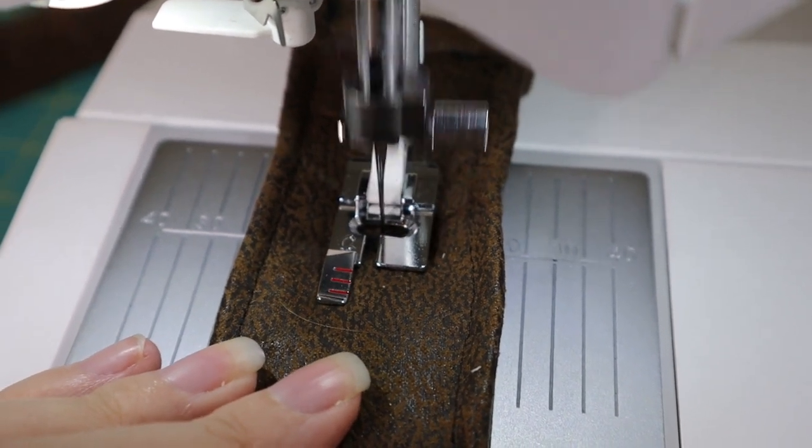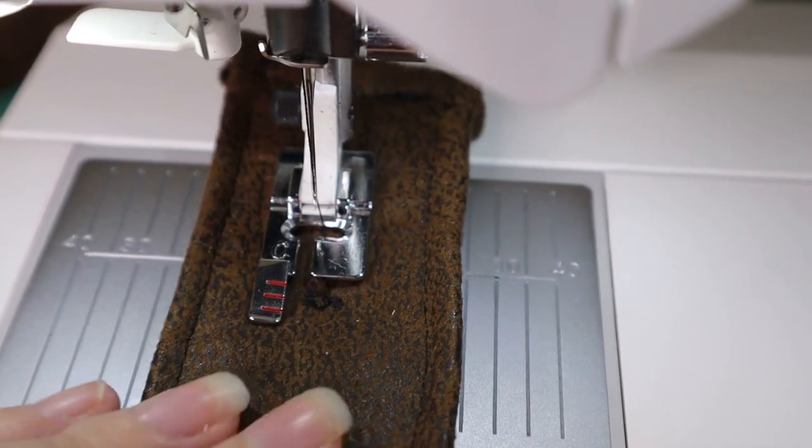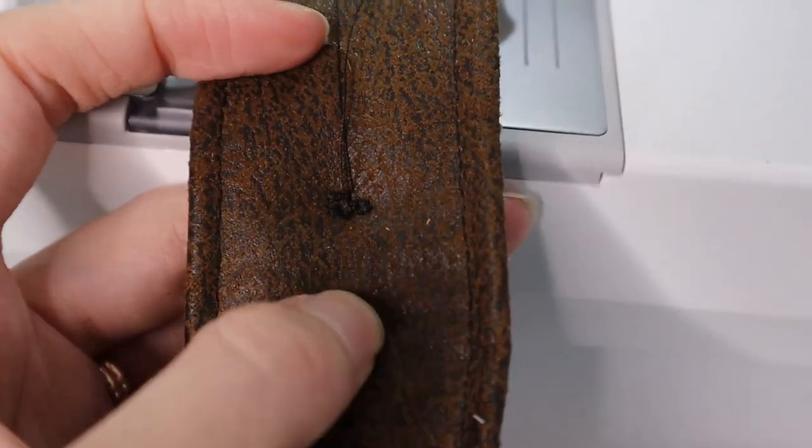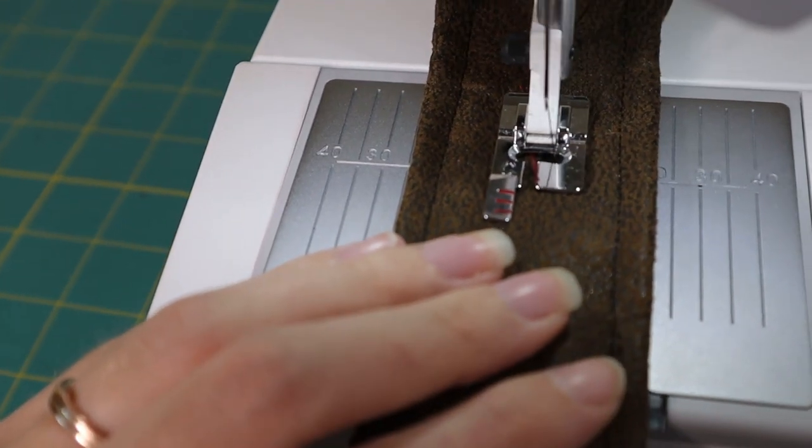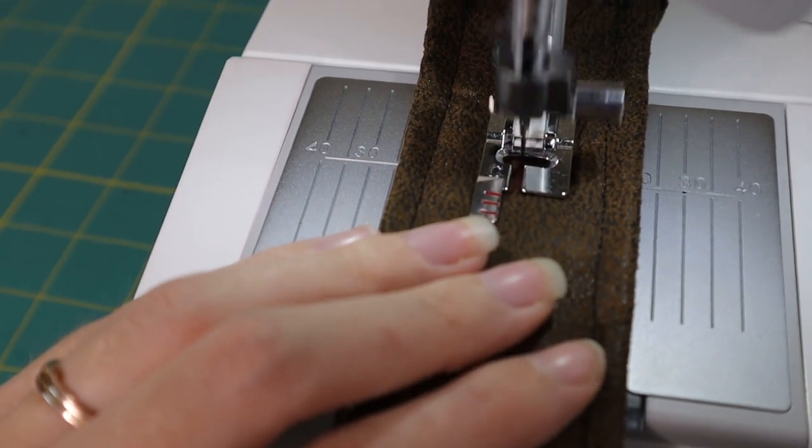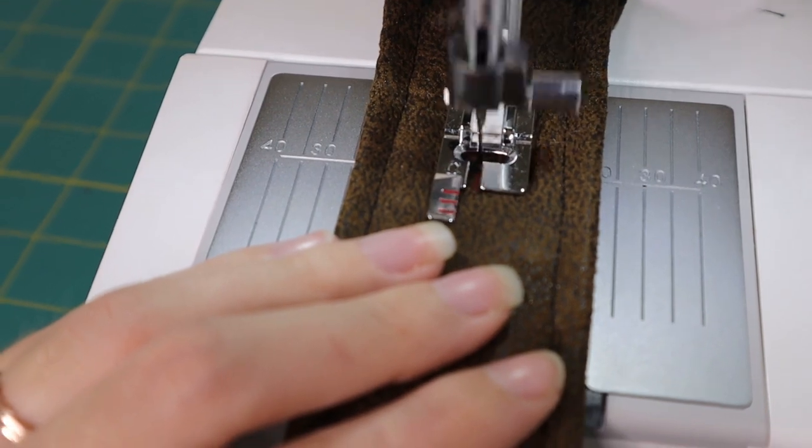Now I can do this with my machine, but you could also do it by hand if you would like. You just want some thread in order to reinforce that circle that you're going to cut in the belt so that it doesn't fray and it doesn't tear any bigger than you want it to.